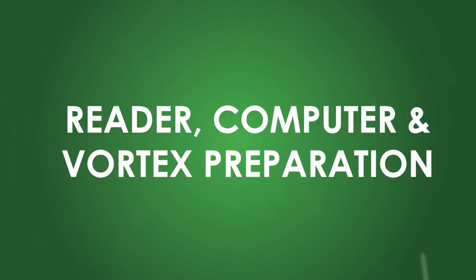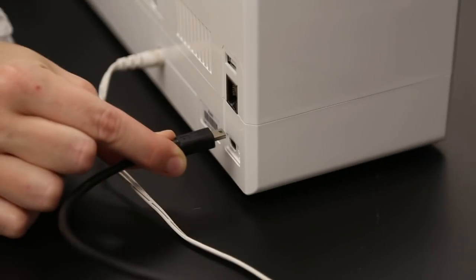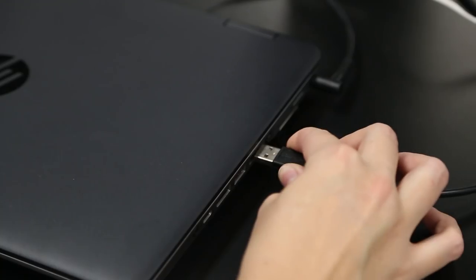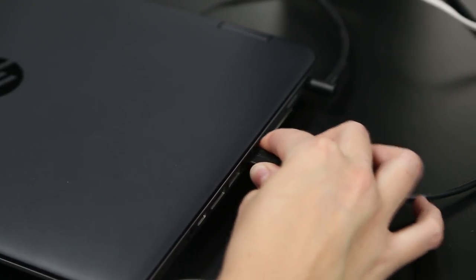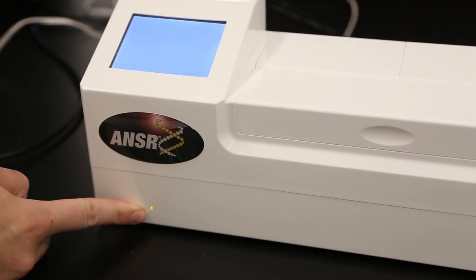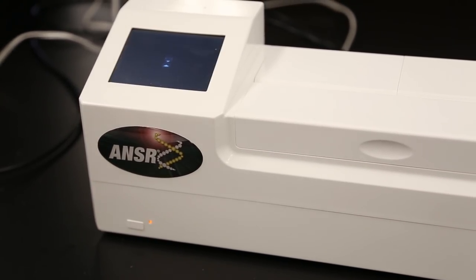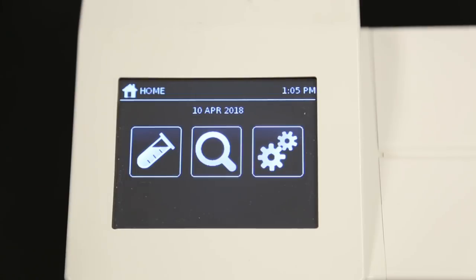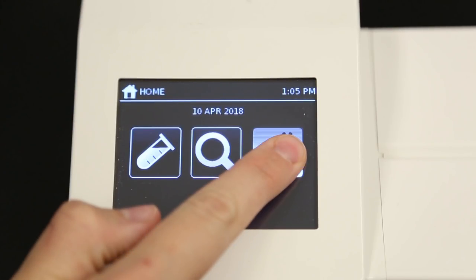Reader, computer, and vortex preparation. Make sure the answer reader and provided laptop are plugged in, and the connector between the reader and laptop is secure. Turn on the answer unit by holding the button on the front just for a moment. It takes the unit about a minute to load the software for use. The first time you use the reader, you need to select the third box on the touch display with the gears.